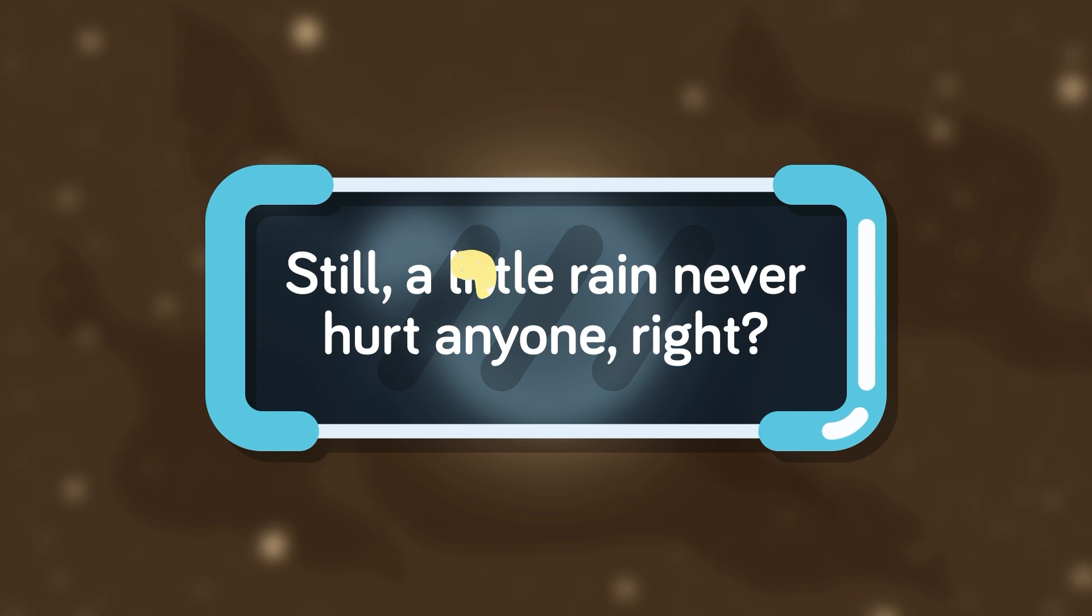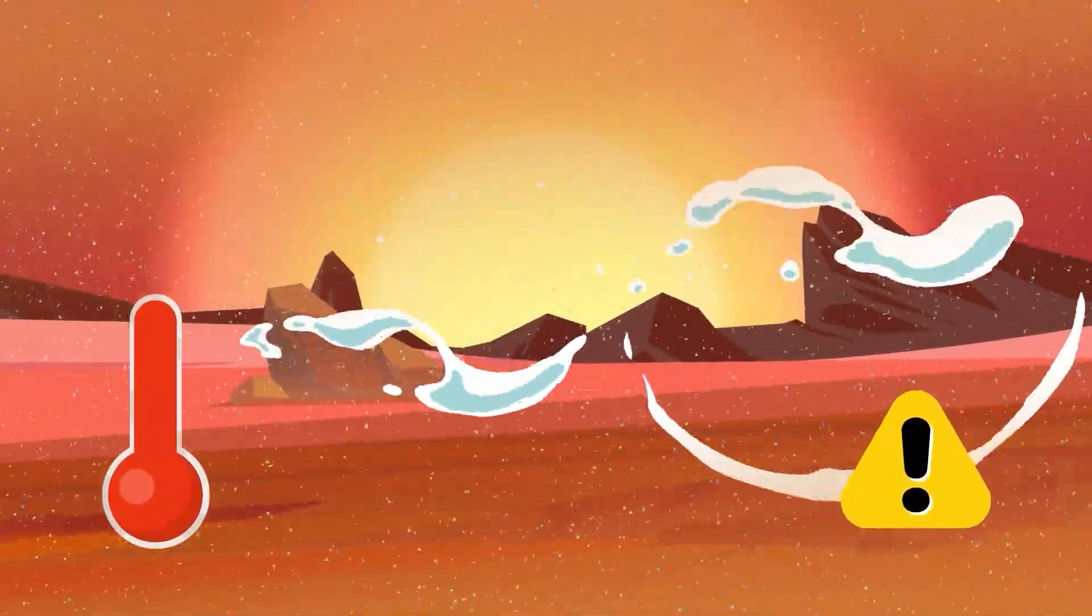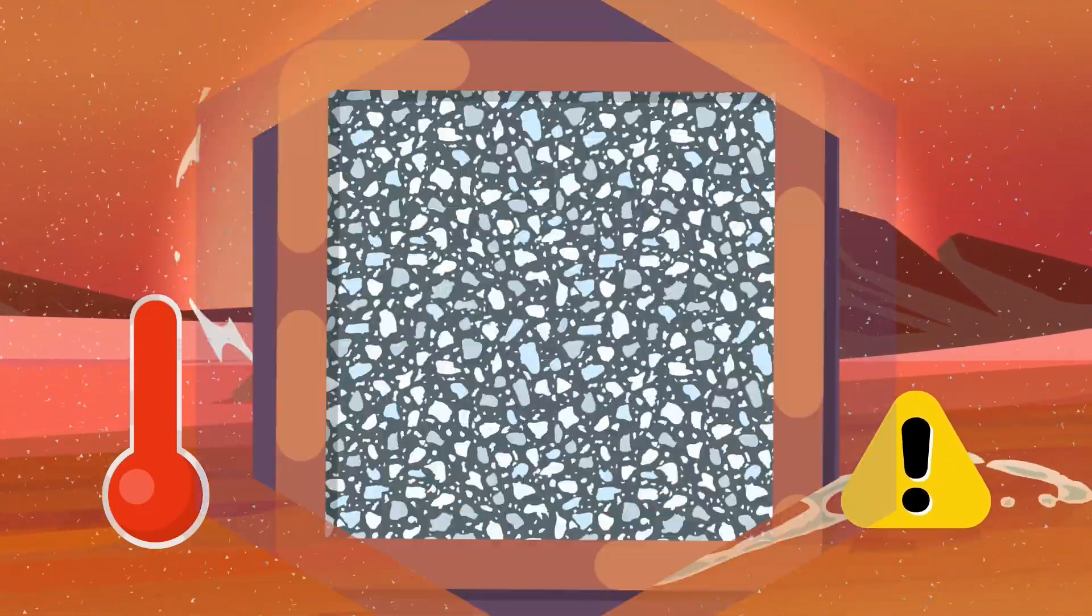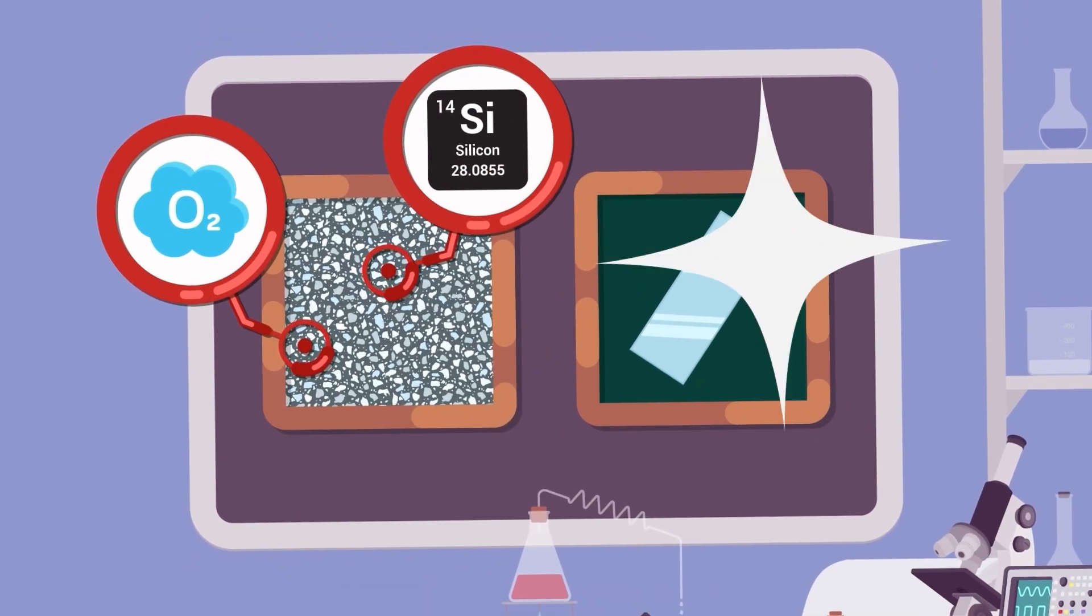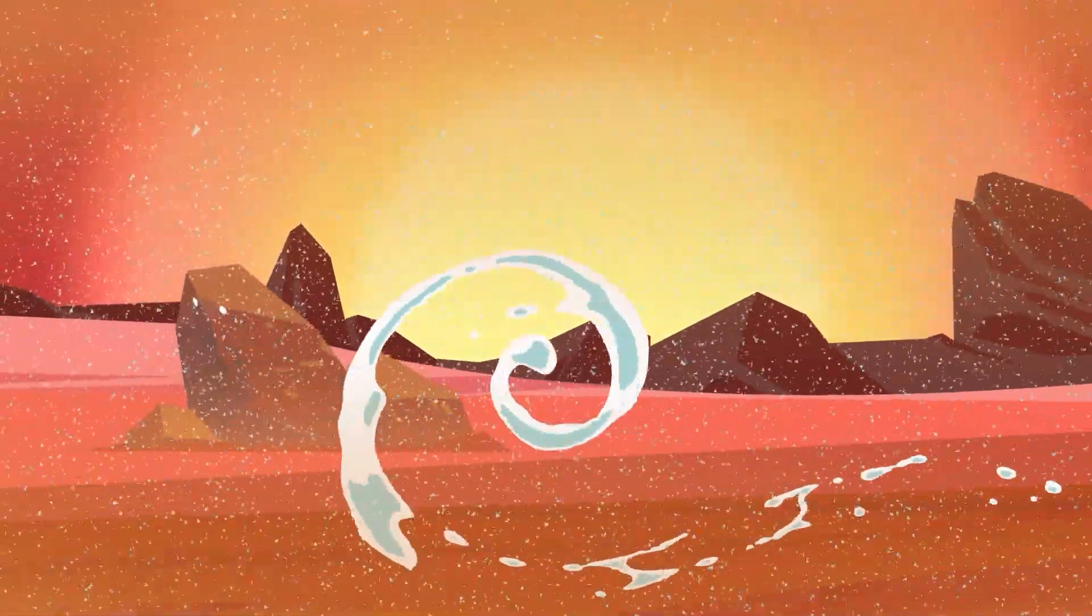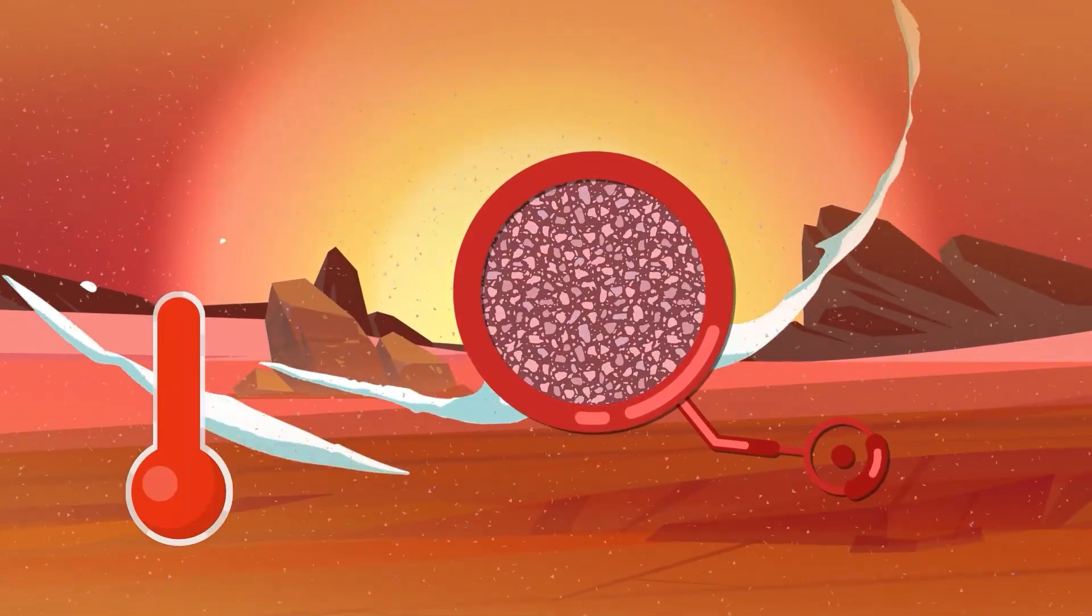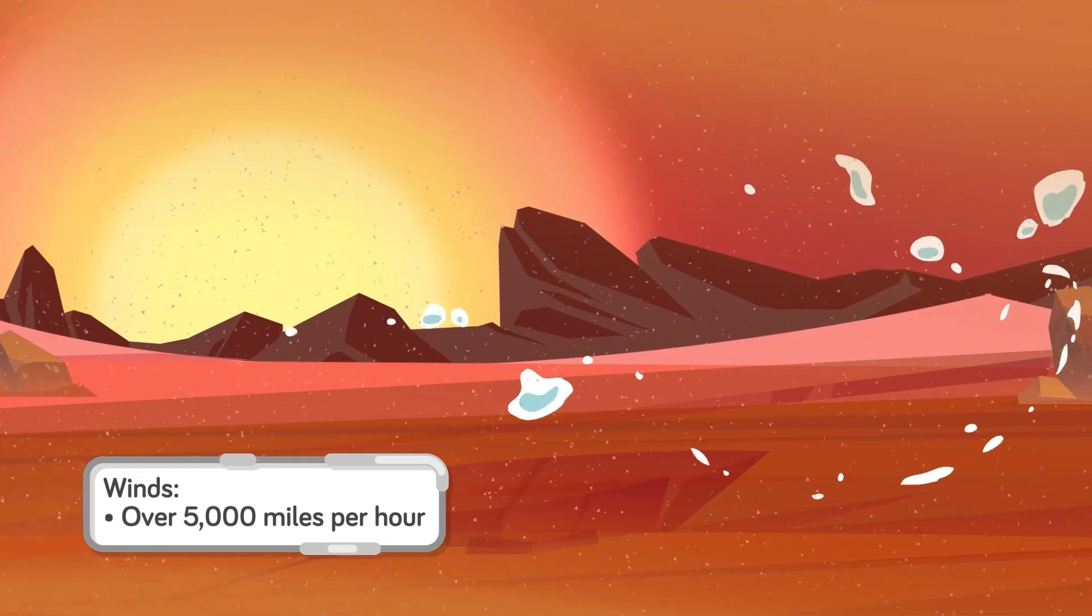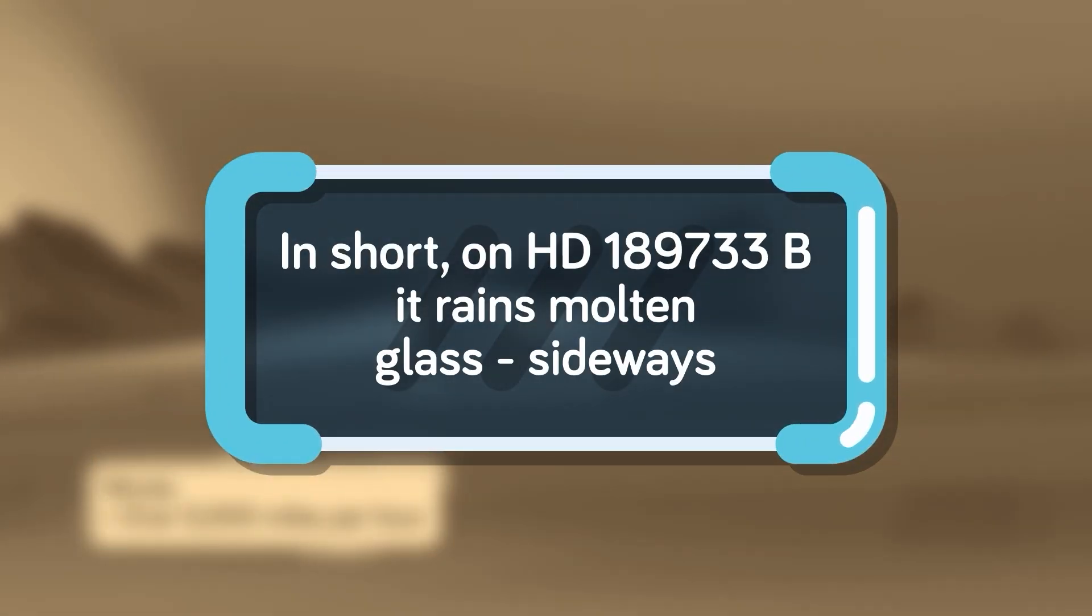Still, a little rain never hurt anyone, right? Well, here it might just cut you to pieces, as it's not just high temperatures that make the planet so dangerous. Its atmosphere is also home to clouds that are rich in particles of silicate. These are naturally occurring particles that contain silicon and oxygen. On Earth, the closest compound we have to this is glass. Thanks to the heat from the nearby star, the silicate particles in HD 189733 b's atmosphere are heated to the point where they become molten, and are then blown horizontally by howling winds traveling at well over 5,000 miles per hour. In short, on this planet, it rains molten glass sideways.